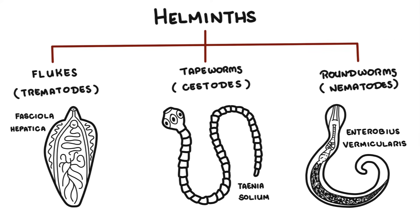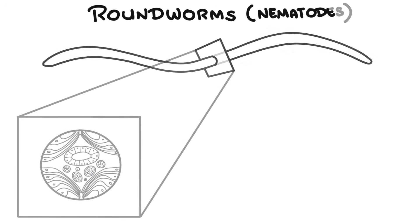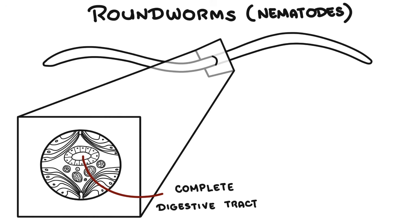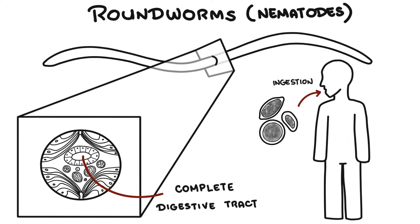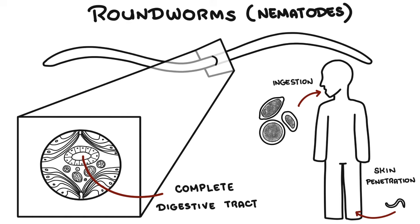The third and last type of helminth are the roundworms, called nematodes. Roundworms are cylindrical worms with a complete digestive tract — they are not flat. They contain a body cavity and inhabit intestinal and extraintestinal sites within our bodies. Roundworms can gain entry to the host by egg ingestion, such as trichuris, enterobius, and ascaris. Others produce larvae that penetrate the skin of their host, such as strongyloides, or produce larvae that penetrate the mucosa, such as ascaris.